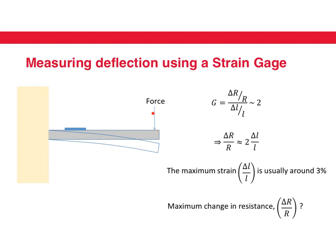And what happens when we apply force? This beam will bend. We can measure this bending by seeing how much the upper surface expands. To do that, we bond the strain gauge on top of the beam.